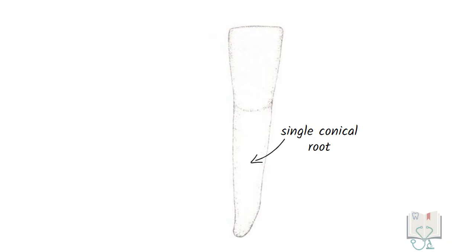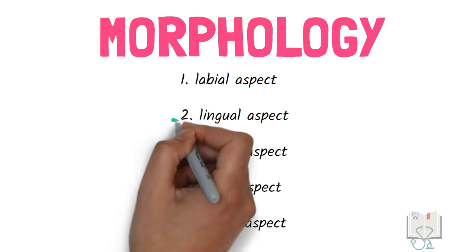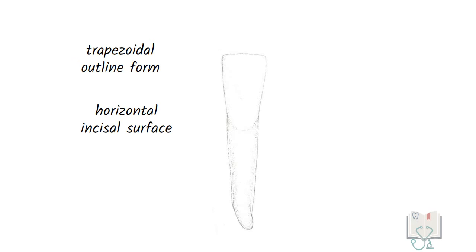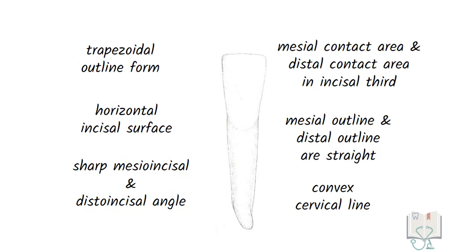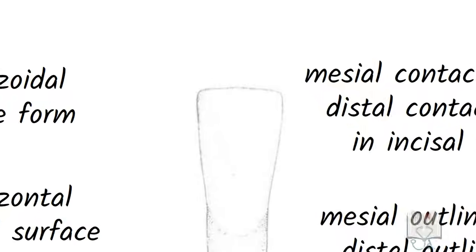The single root is conical and tapering with root tip frequently curving towards the distal side. Next, the lingual aspect. The features of the outline form from the labial aspect are same from the lingual aspect as well. However, the lingual surface is very different with convexities and concavities.